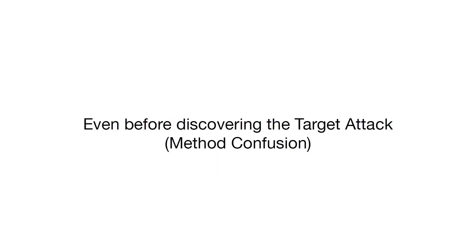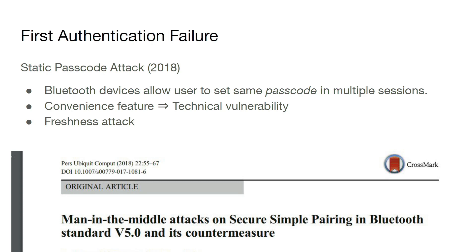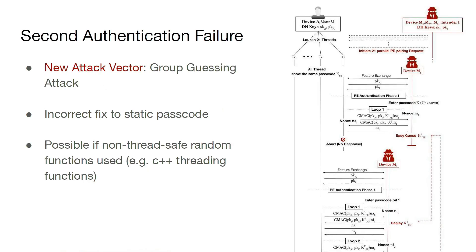As a result, we discover five different attacks. Even before discovering our targeted attack, we discovered an existing static passcode attack from 2018 — a convenience feature which resulted in a technical vulnerability based on a freshness attack. Our second authentication failure resulted in a new attack vector called group guessing attack. It builds upon the static passcode attack: if a Bluetooth device uses different threads to connect to other Bluetooth devices and uses a non-fresh random function, then an adversary can launch 21 parallel devices to derive the passcode and break the security of passkey entry.